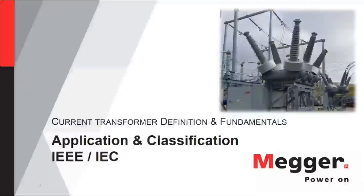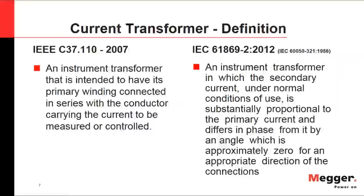Let's start with the application and classification of current transformers. We have two main standards: the IEEE and the European or international IEC standard. In IEEE C37.110, a current transformer is defined as an instrument transformer intended to have its primary winding connected in series with the conductor carrying the current to be measured or controlled.